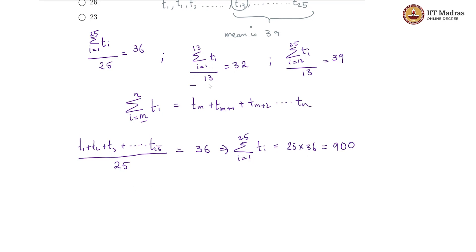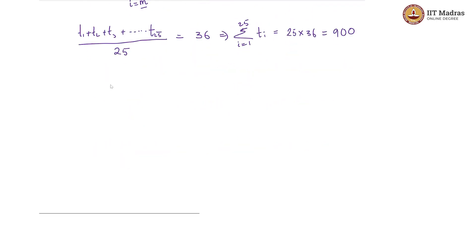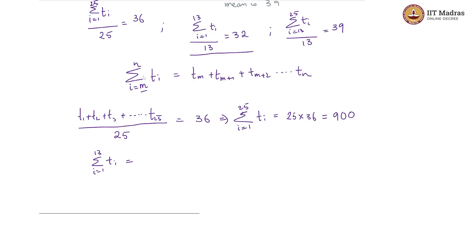And now from the second piece of information, we get that sigma i goes from 1 to 13 t i, that is the sum of the first 13 terms. So what is the mean? The mean is 32, so 13 into 32, which is essentially 416.